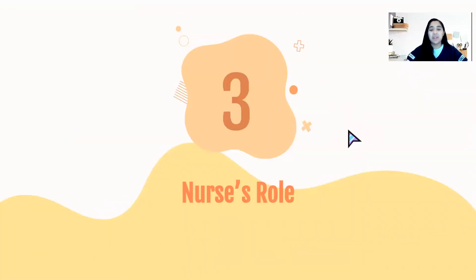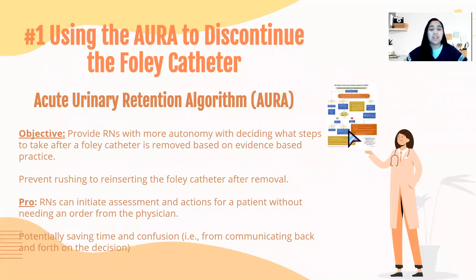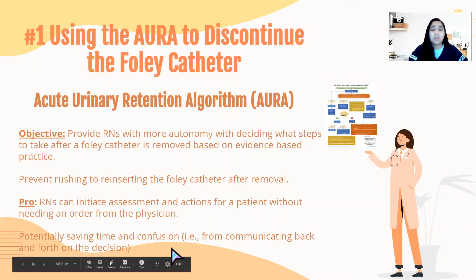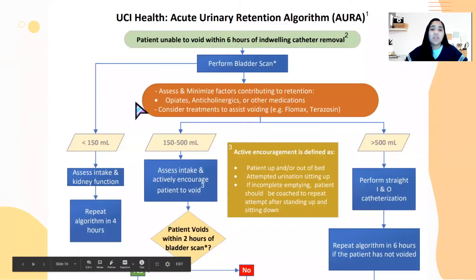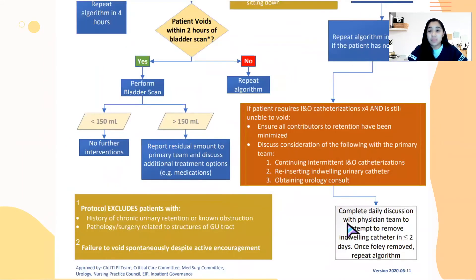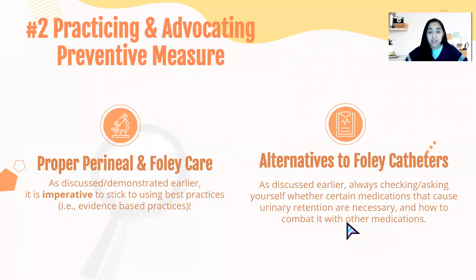The first thing nurses can do is use the Acute Urinary Retention algorithm, also known as ARA. This helps prevent rushing to reinsert the Foley catheter after removal. The pros of using this algorithm are that nurses can follow the guideline if a patient has not voided after six hours, without having to contact the physician each time. This saves time and confusion. You would perform the bladder scan and go from there — the overall goal is to prevent reinsertion of a Foley catheter.